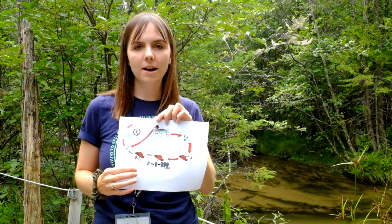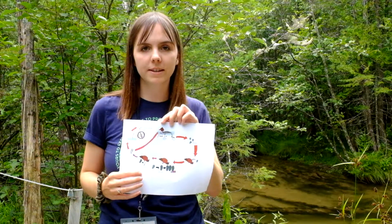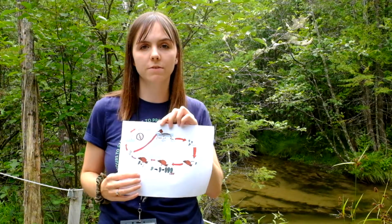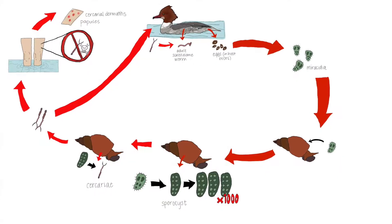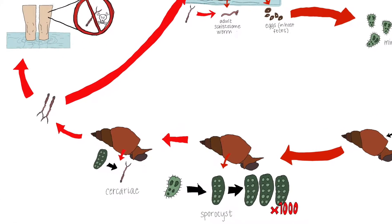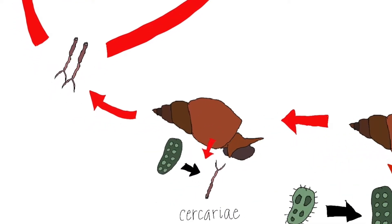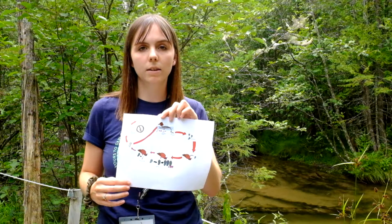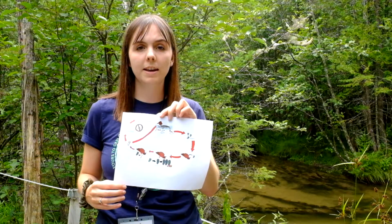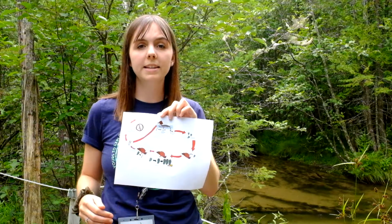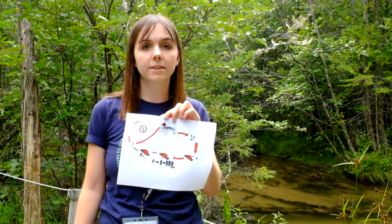After approximately one month, the sporocysts metamorphose into their final larval stage, the cercariae, and then together they burrow out of the snail and re-enter the water column. Again they are free-living larvae that do not feed, so they have only 24 to 48 hours to find their final definitive host, otherwise they'll die.